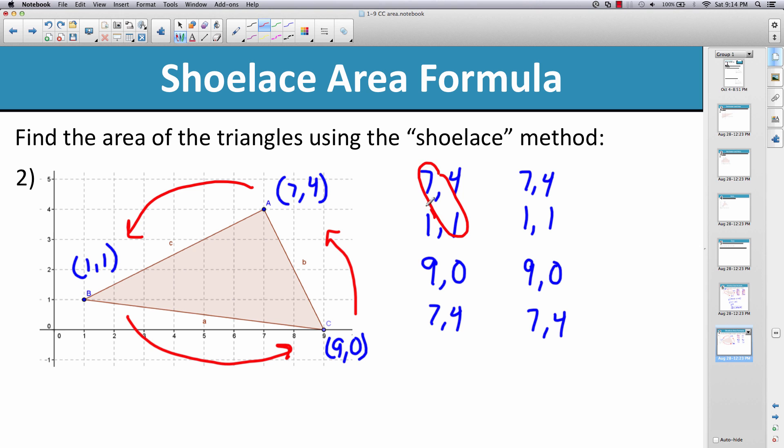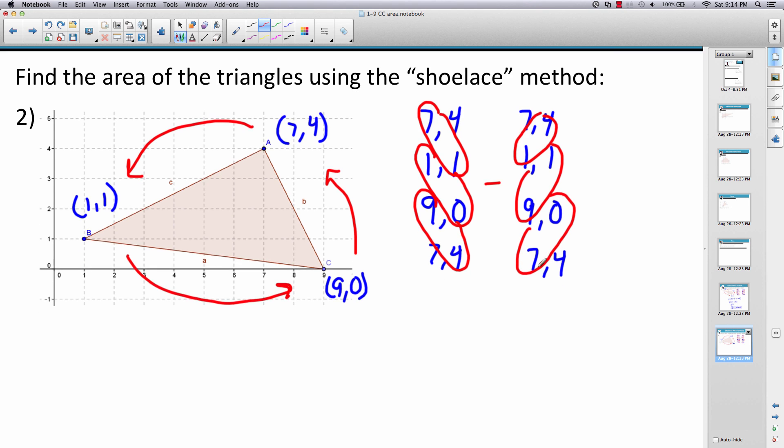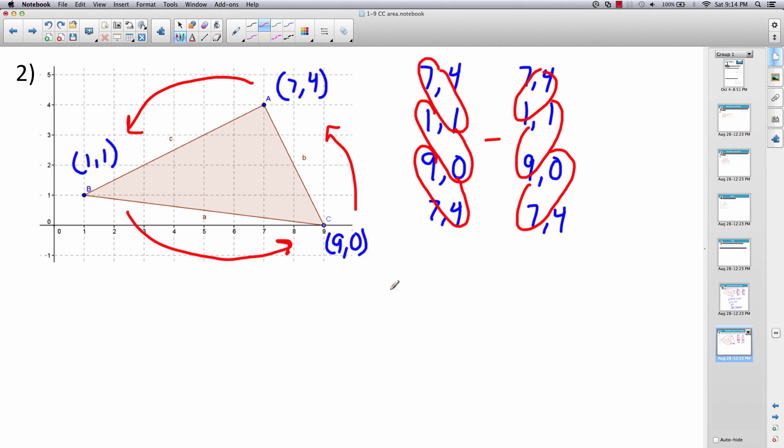So one half of: 7 times 1, plus 1 times 0, plus 9 times 4, minus 4 times 1, plus 9 times 1, plus 7 times 0. And then it's going to be half of that answer.